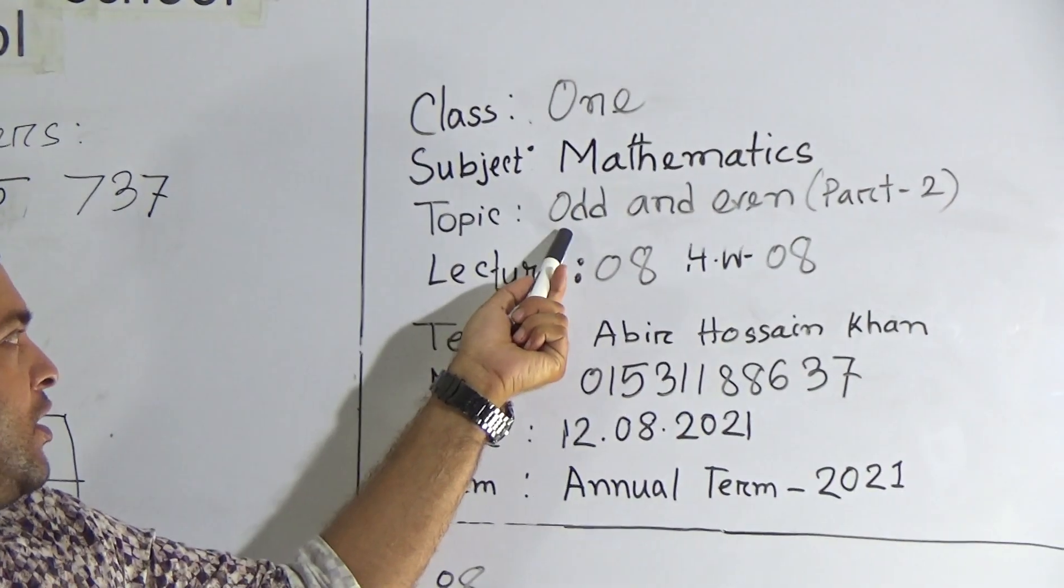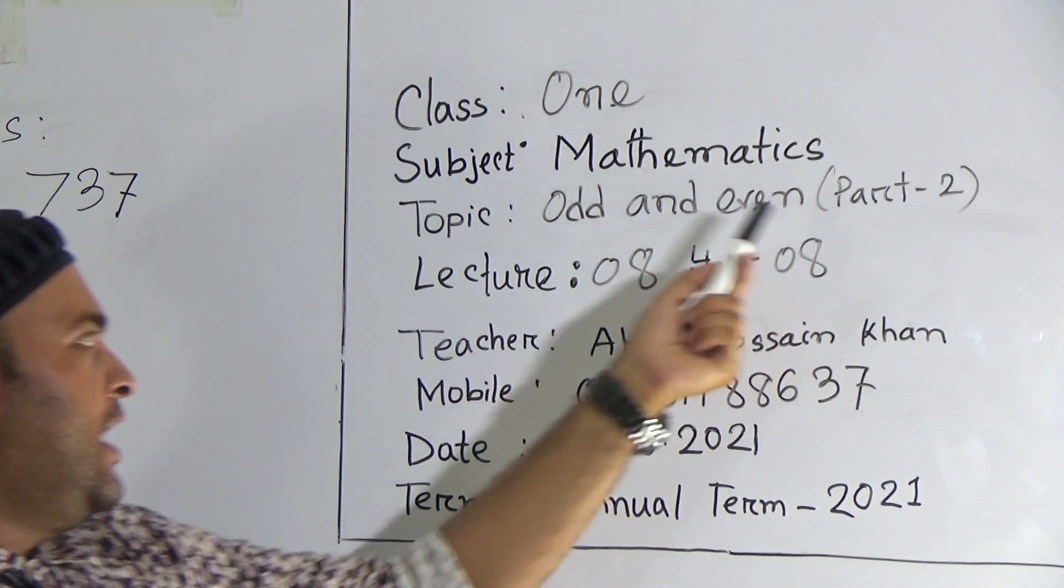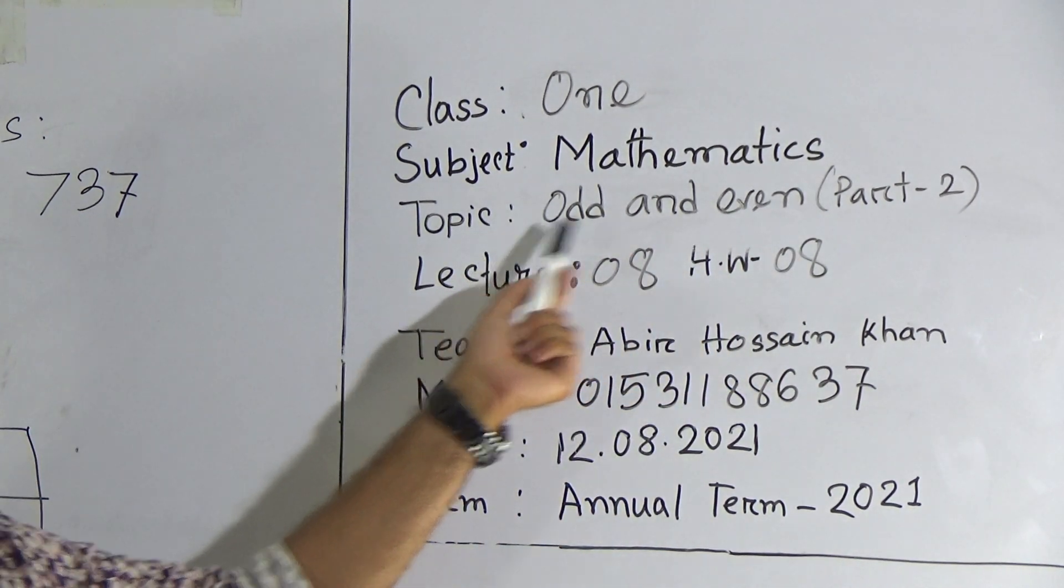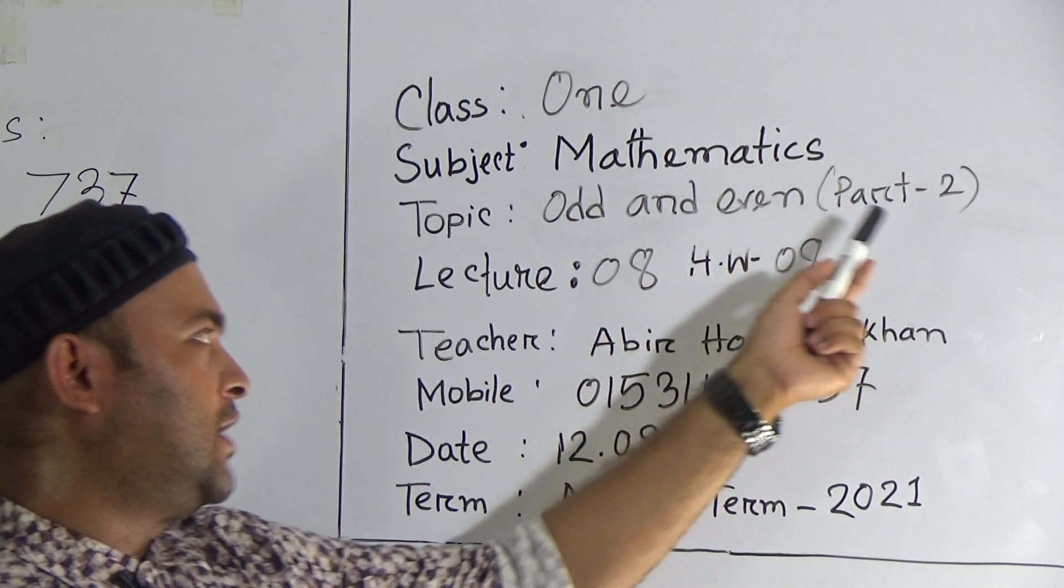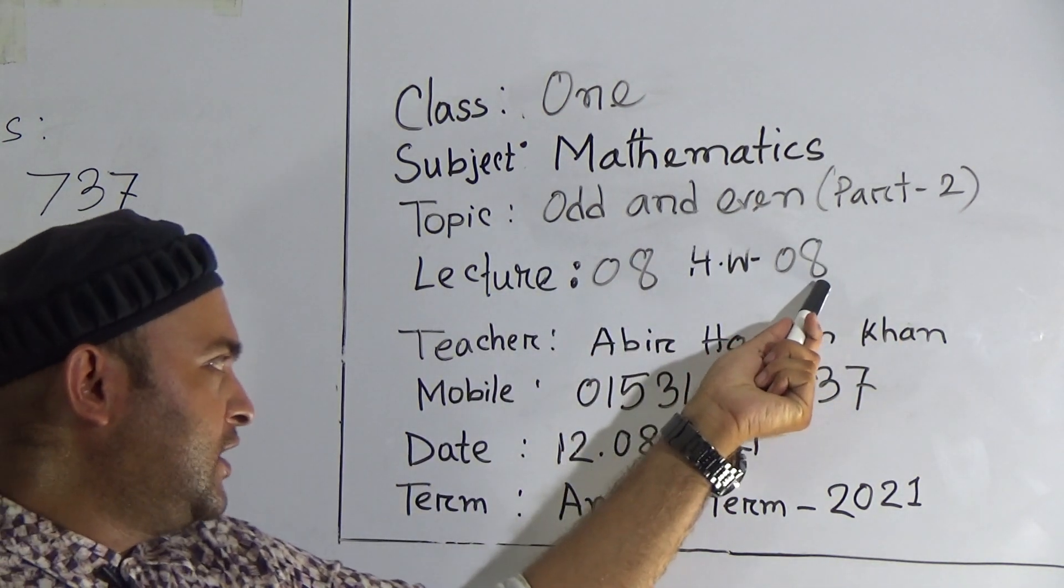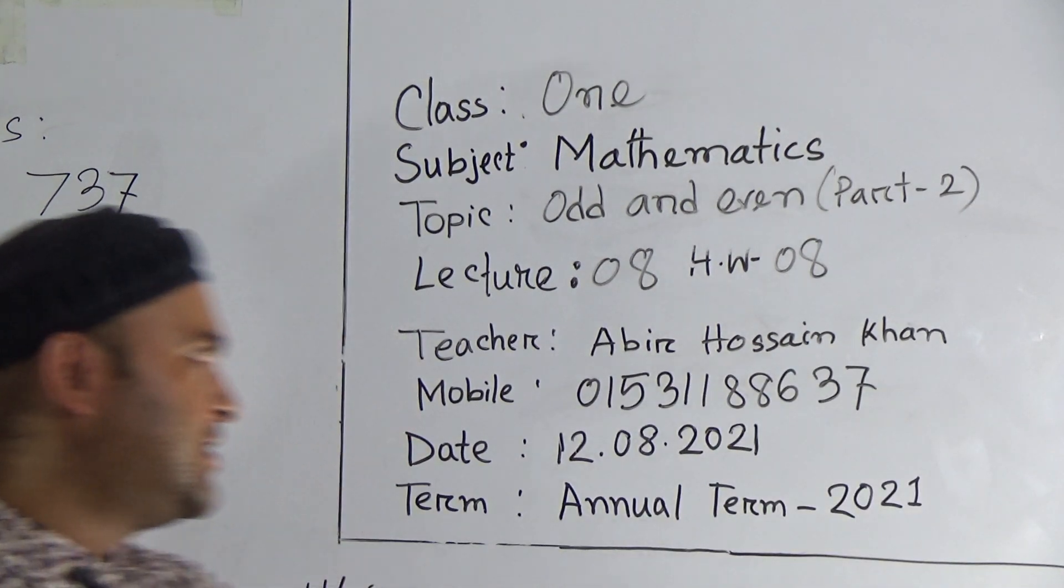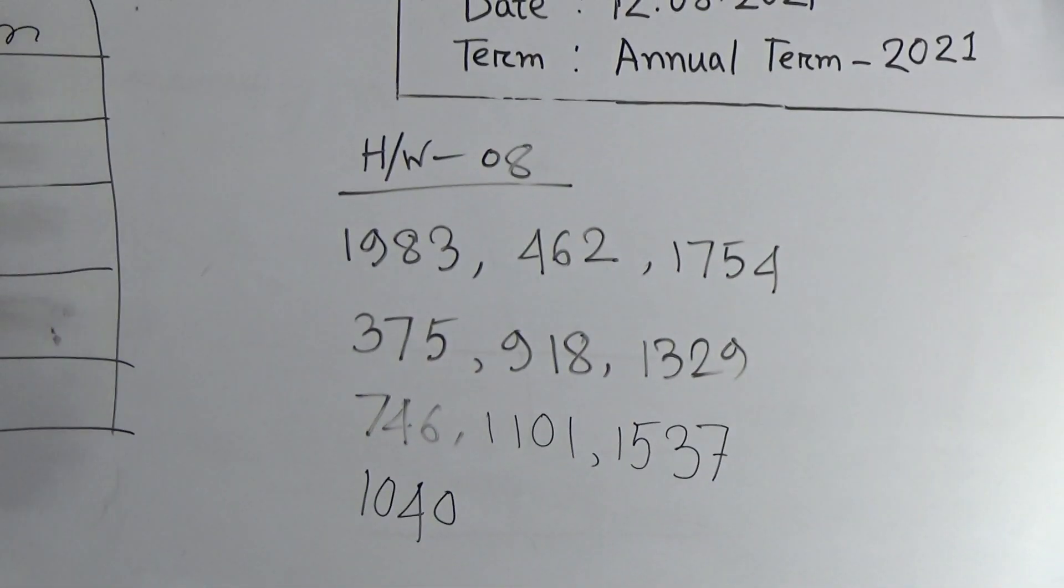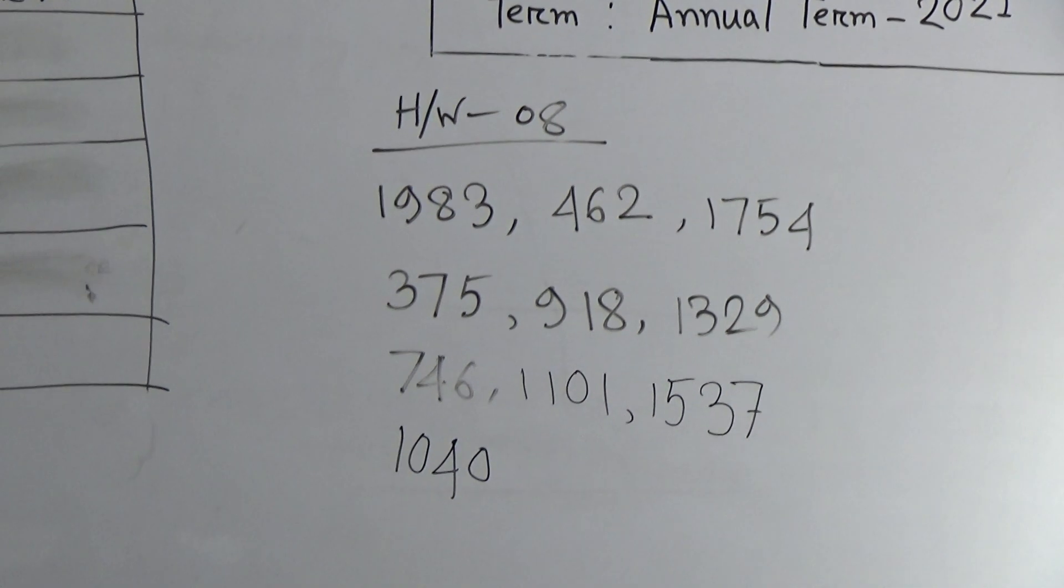Our today's class is odd and even numbers. And in the very last one, we have already learned Part 1. And today, we will learn Part 2. Our today's lecture is 8. And our homework is number 8. You have to submit your homework on your school campus next Saturday. Now, let us start our class.